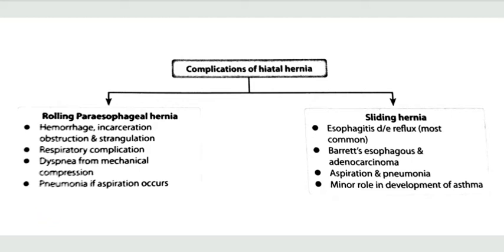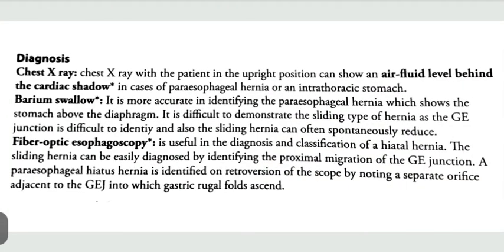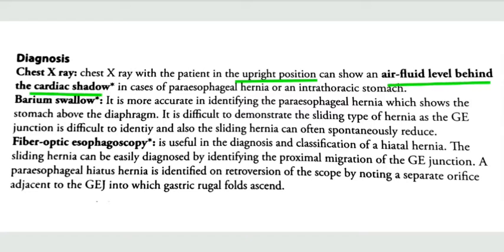For diagnosis, investigations include chest X-ray, barium swallow, and fiber optic esophagoscopy. On chest X-ray taken in the upright position, we will see air-fluid levels behind the cardiac shadow — this is a potential exam question. However, this finding is seen only in cases of paraesophageal hernia.